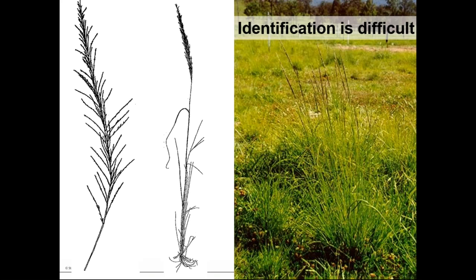One of the big questions asked is: how do I identify it? Stock identification is difficult. If you look on the left of that screen, you'll see a seed head that is probably the very typical seed head you would see. But one of the problems is we have a lot of variation around the structure and shape of the seed heads — sometimes the branches will be shorter and pressed into the central stem.